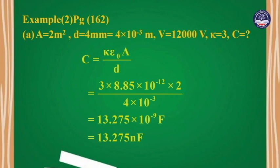C equals kappa times epsilon-naught times A divided by d, equals 3 times 8.85 times 10 to the power minus 12, times 2, divided by 4 times 10 to the power minus 3, equals 13.275 times 10 to the power minus 9 farads, or 13.275 nanofarads.